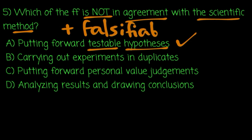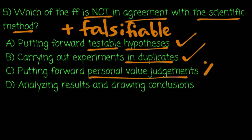Albert Einstein discussed falsifiability — the ability to disprove a hypothesis. Carrying out experiments in duplicates improves reliability. Putting forward a personal value judgment is not part of the scientific method — that's why it does not agree with it. Analyzing results and drawing conclusions is a valid part of the process.